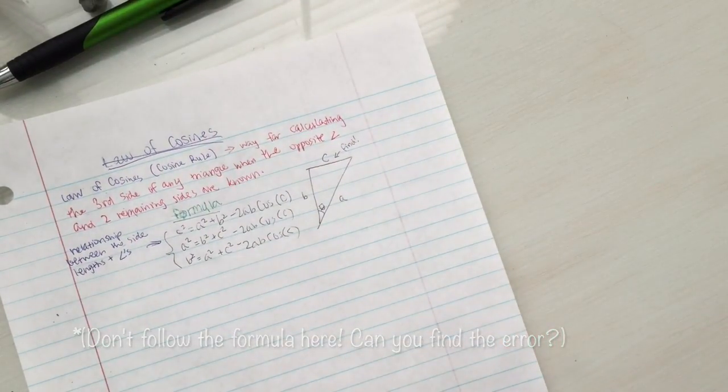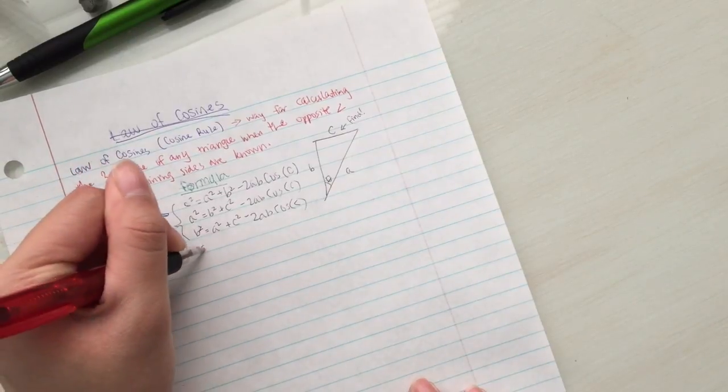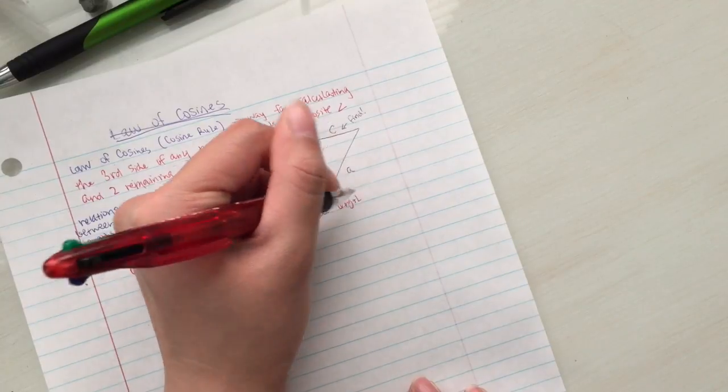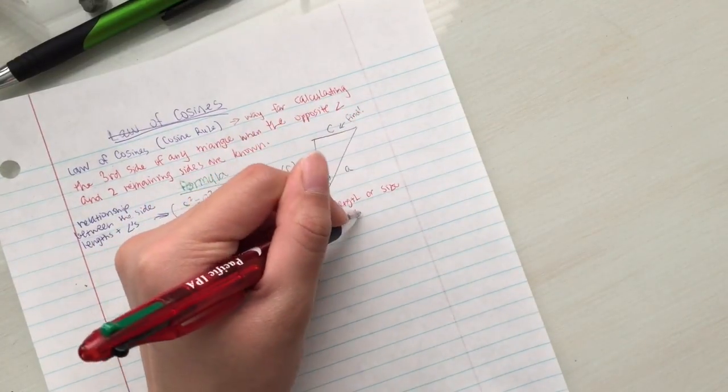You can use the law of cosines to find either the length of a side or the size of an angle. For example, here you can find the third side length using the given sides and the included angle.